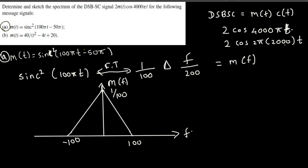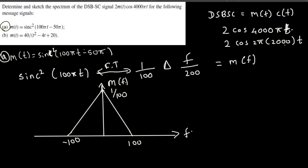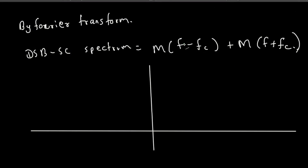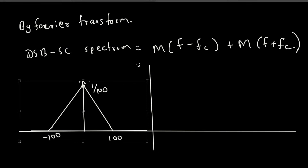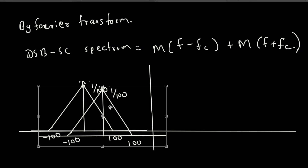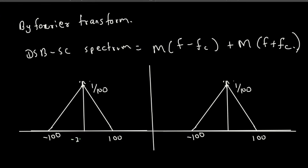So 2000 is the carrier frequency. What we have to do is draw the spectrum shifted 2000 units to the right and 2000 units to the left. I'm copying the M(f) triangle diagram and moving it to be centered at +2000. Since the triangle extends ±100 from its center, the right-side triangle goes from 1900 to 2100, centered at 2000.